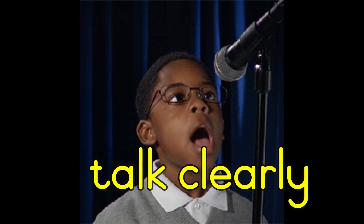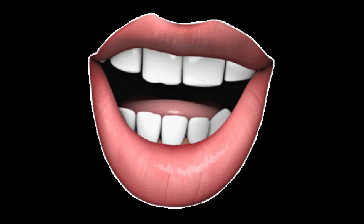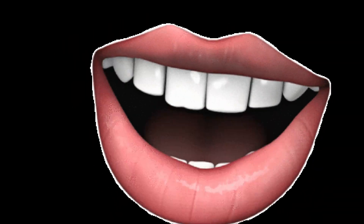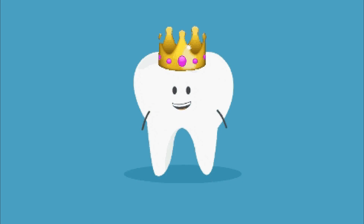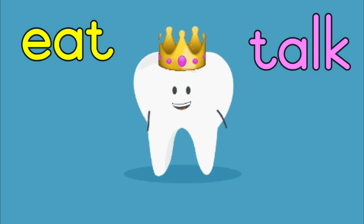How do our teeth help us to talk? Our teeth help us to talk clearly. Why don't you try it — hide your teeth with your lips and try to talk. Are you able to talk? No! So teeth are very important because they help us talk clearly. Teeth also help our smile, so we need our teeth to eat, to talk, and to smile.